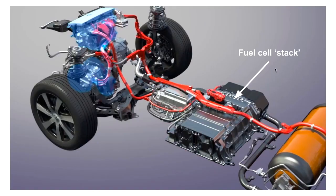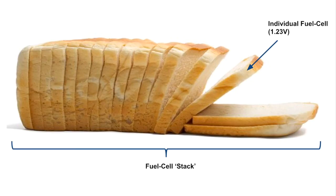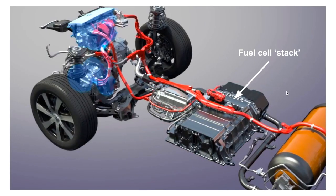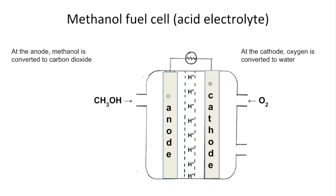In a fuel cell vehicle, you have what's called a fuel cell stack. The best way to think about it is like a loaf of bread, where each individual slice is a fuel cell. It's only producing 1.23 volts, but you can create a large voltage by connecting lots of these fuel cells in series — that's the fuel cell stack.